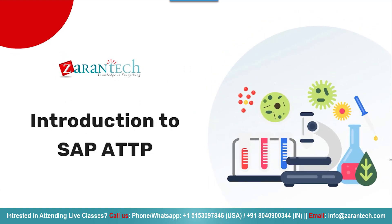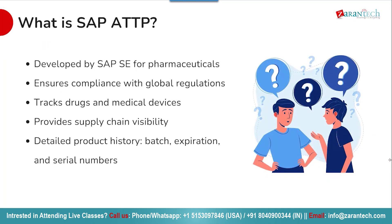Let us begin with the introduction to SAP ATTP. SAP Advanced Track and Trace for Pharmaceuticals, also known as SAP ATTP, is a solution developed by SAP SE specifically for the pharmaceutical industry. Its main purpose is to ensure compliance with global regulations around tracking and tracing drugs and medical devices throughout the supply chain. SAP ATTP provides end-to-end visibility by capturing detailed product history, including batch numbers, expiration dates, and serial numbers.